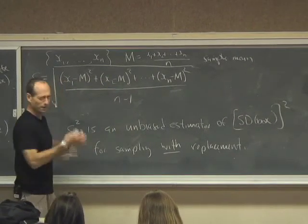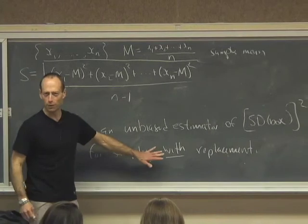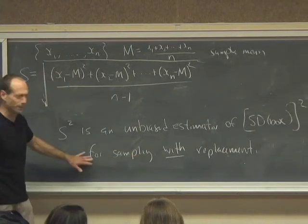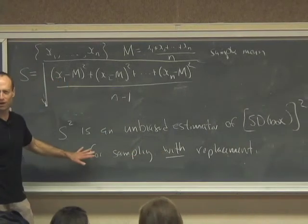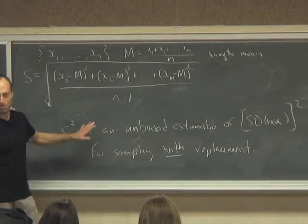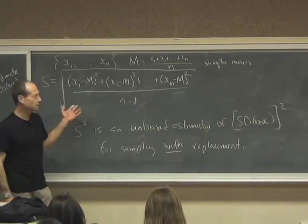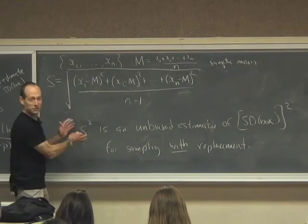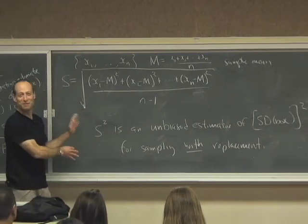Moreover, we're talking about simple random samples. We're sampling without replacement, not with replacement. So what happens under sampling with replacement seems like it's a little off base. Nonetheless, this is what is traditional to use to estimate the SD of the box.